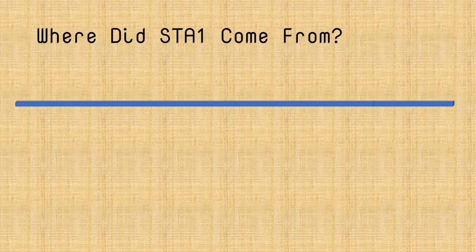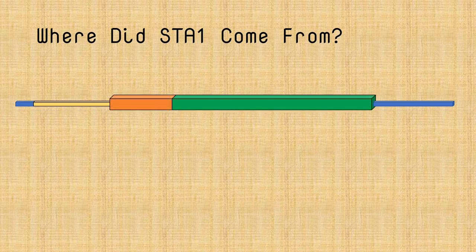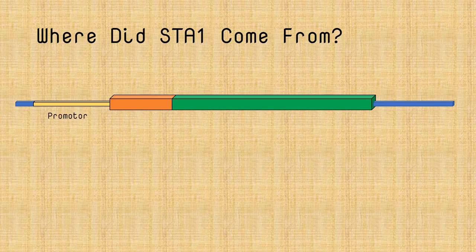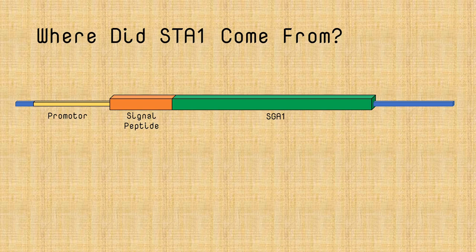So that raises the question of where did this STA1 gene come from? And when you look at the genome of the yeast, you see something that looks like a pretty typical gene. At the front of the STA1 gene is something called a promoter. This is the part of the gene that allows the yeast cell to turn the gene on or off. And so when the gene is turned on, the yeast cell will read this DNA sequence and make the STA1 protein, which is the thing that actually breaks down the sugars. Next up is something called a signal peptide. This is a part of the protein that tells the yeast cell to export that protein. But then kind of surprising following that signal peptide is the SGA1 gene. This is the gene that in other yeast strains allows them to break down that glycogen, that internal energy store.